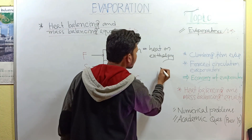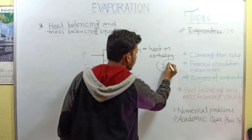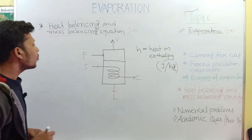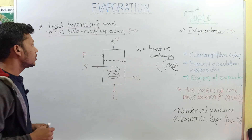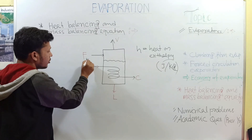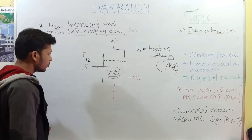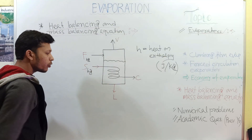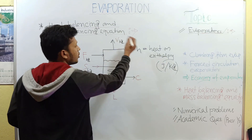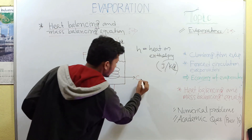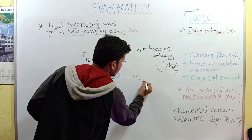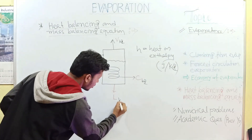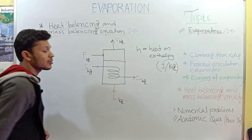The unit of enthalpy is joule per kg — remember this. Now consider that F kg of feed is introduced, S kg of steam is introduced, V kg of vapor is produced, C kg of condensate is produced, and L kg of product is collected.